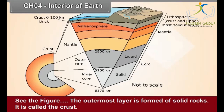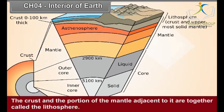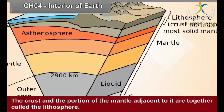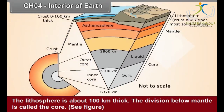The outermost layer is formed of solid rocks and is called the crust. The division below the crust is called the mantle. The crust and a portion of the mantle adjacent to it are together called the lithosphere. The lithosphere is about 100 kilometers thick. The division below the mantle is called the core.